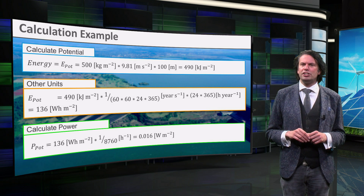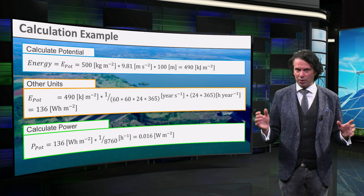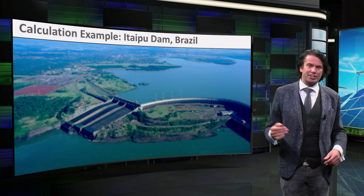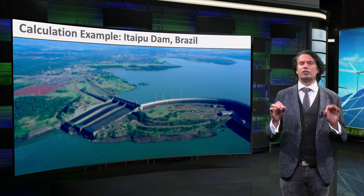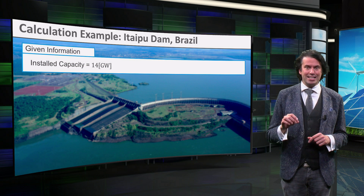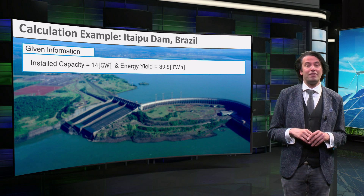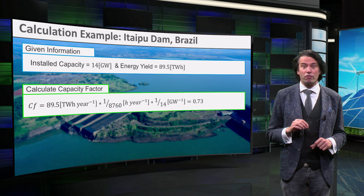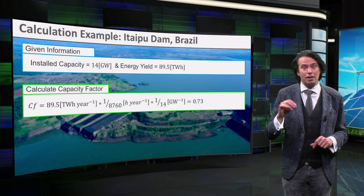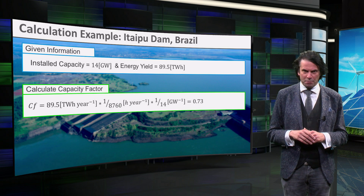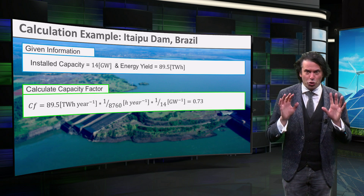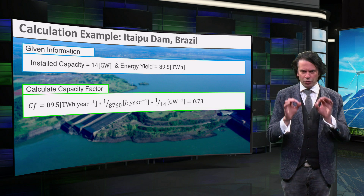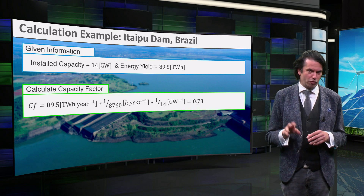To learn more about the total energy yield, let's take a closer look at the Itaipu dam on the border of Brazil and Paraguay. The Itaipu dam is the second largest hydropower plant on the planet. It has a total installed generation capacity of 14 GW and, in 2015, reached a yield of 89.5 TWh per year. Using these values, we can calculate the capacity factor. If we divide 89.5 TWh by 14 GW times the total hours in a year, we receive a capacity factor of 0.73. So on average, the dam produces electricity at maximum capacity during 73% of the time. Note this value is much higher than the average global capacity factor for hydropower of 0.40.